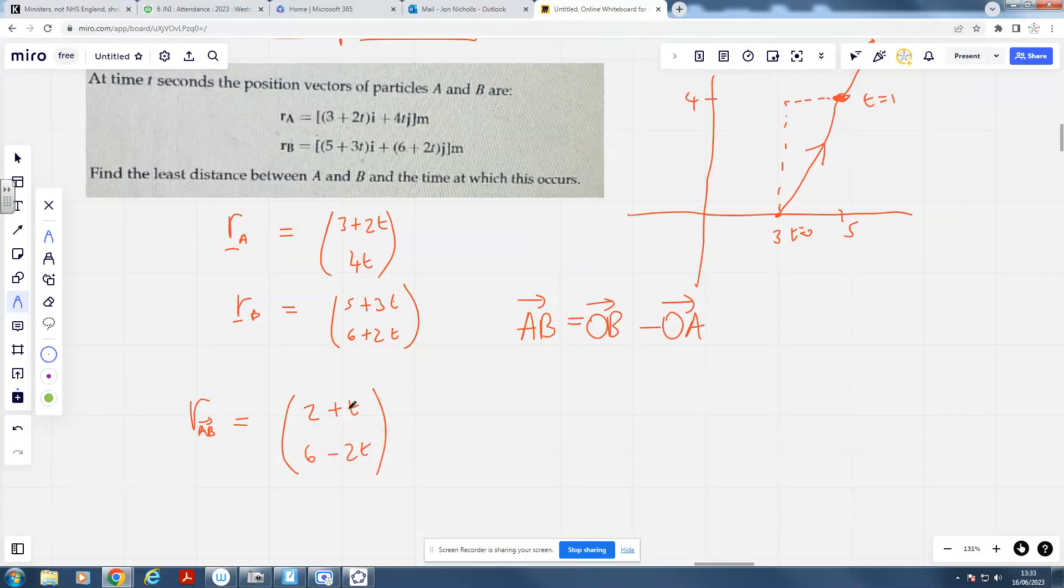So, what are we going to do? Well, we're going to find the length of this vector. We're just going to say the distance between the two objects, squared as well - just to avoid square roots because it's easier - is just going to be (2 plus t) squared plus (6 minus 2t) squared. And so, the distance squared equals t squared plus 4t plus 4. I'm just squaring out the brackets there. And then 36 minus 24t plus 4t squared.